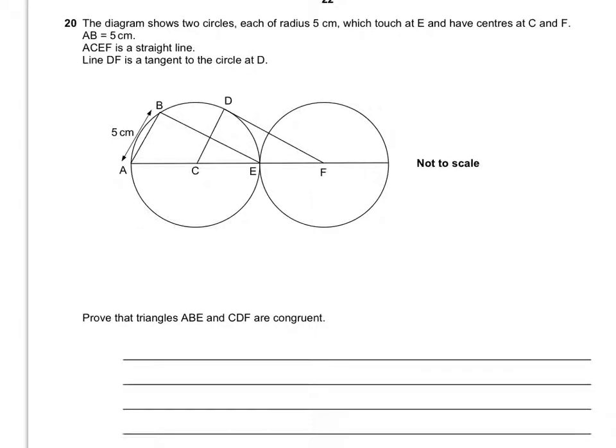Question 20. The diagram shows two circles, each with a radius of 5cm. They touch at E and have centres at C and F. AB equals 5cm, and ACEF is a straight line. The line DF is a tangent to the circle at D.